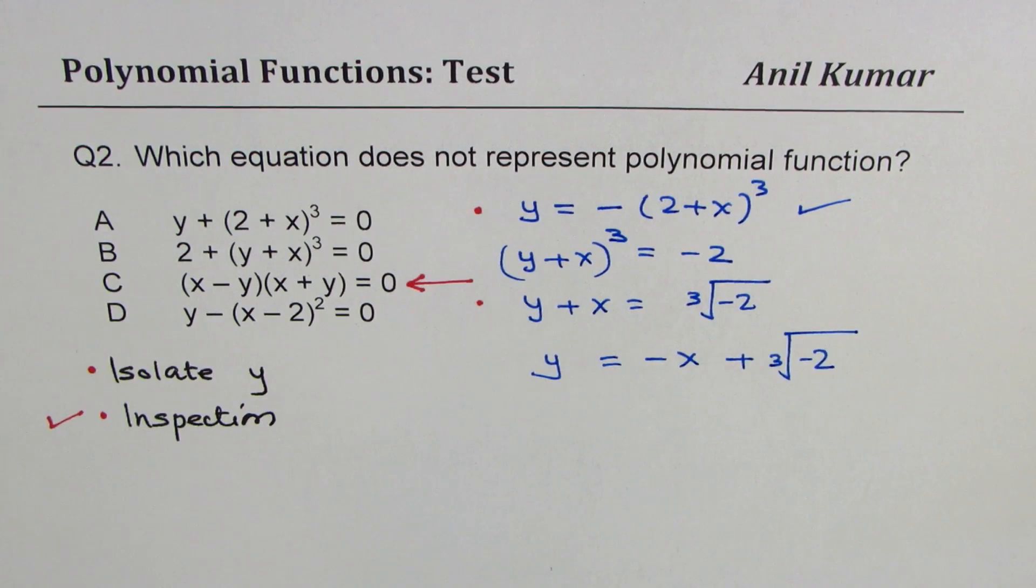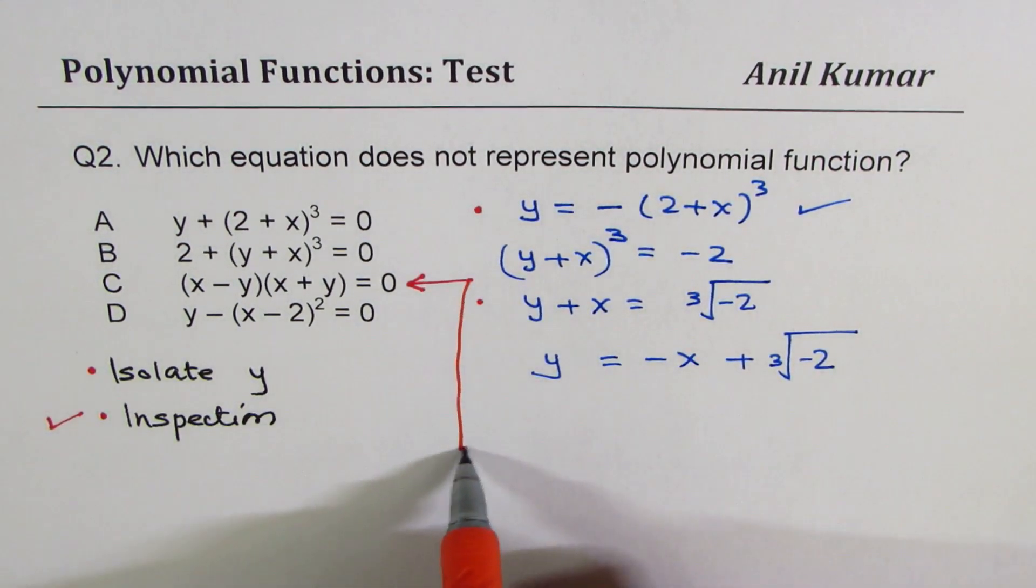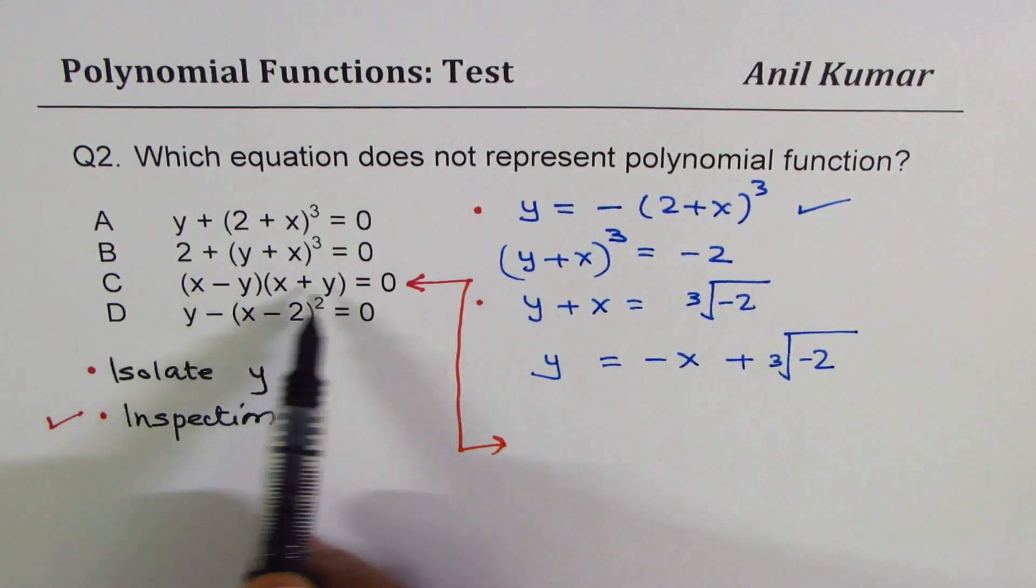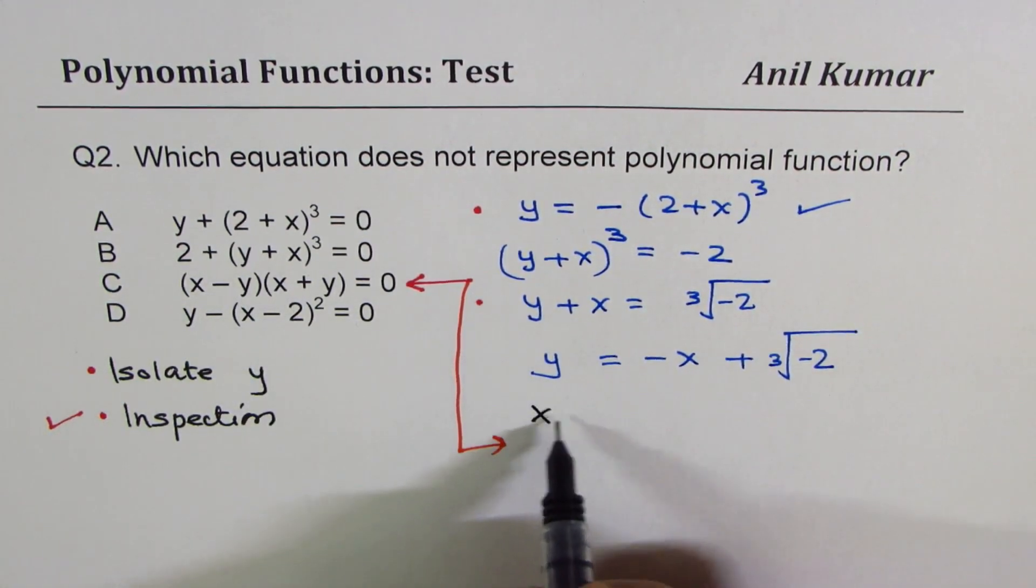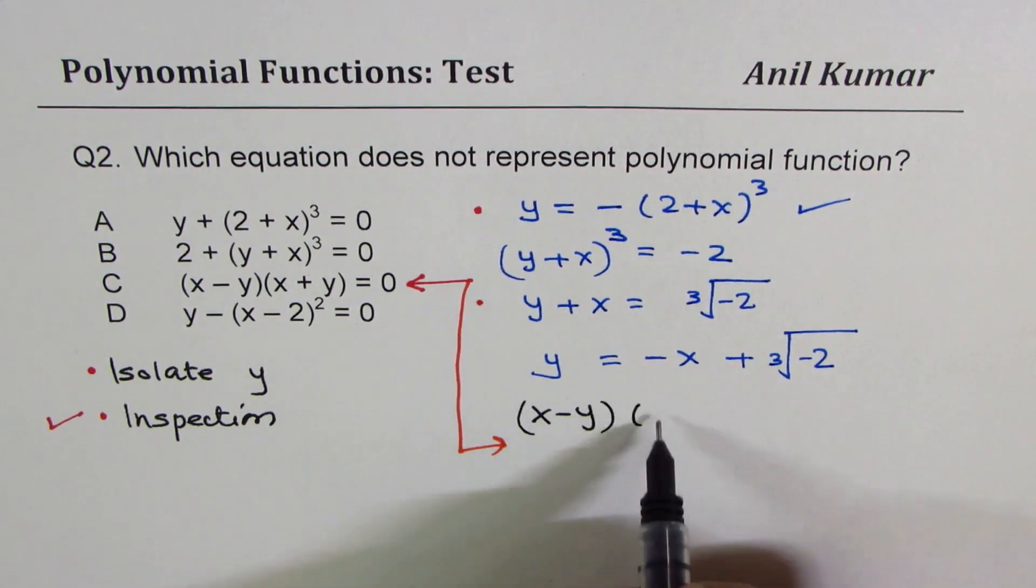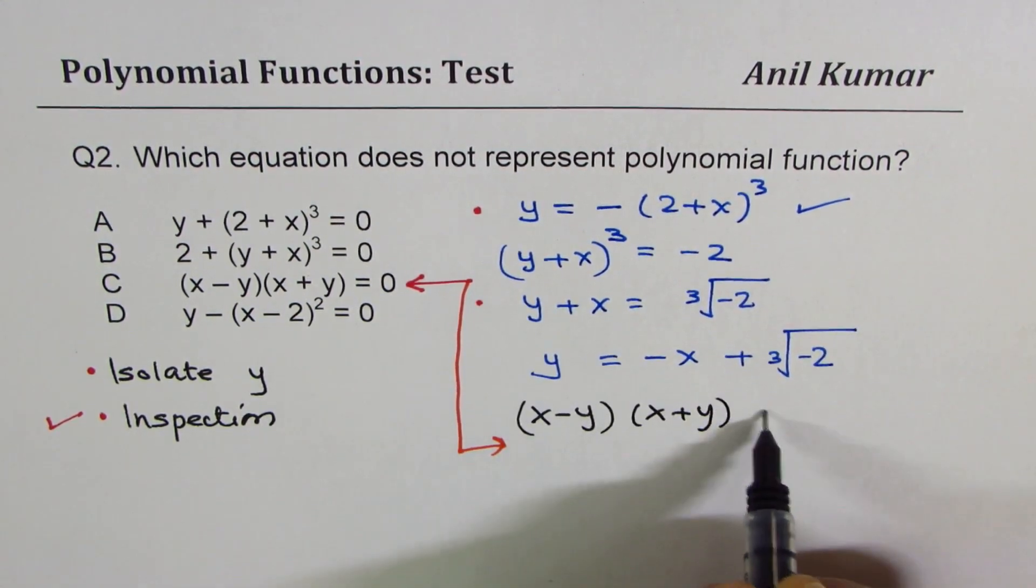The third one, let me show you the third one now, which we thought could be not a polynomial. So it is difference of squares. So when I say x minus y times x plus y equals to 0,